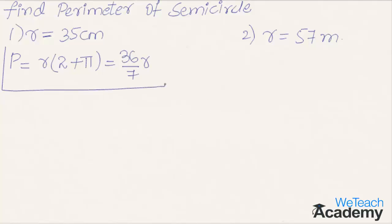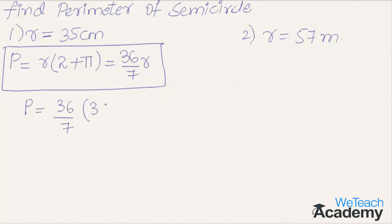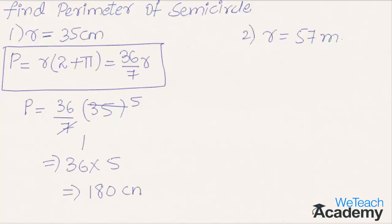The perimeter of a semicircle is given by the formula r into (2 plus pi), which equals 36/7 into r. Substituting the given value of radius, we get P = 36/7 into 35. Simplifying, 7 goes into 35 five times, giving us 36 into 5, which equals 180 centimeters as the perimeter.